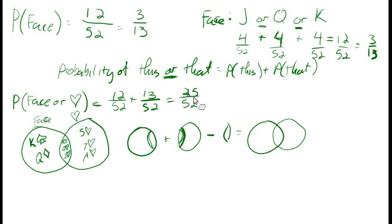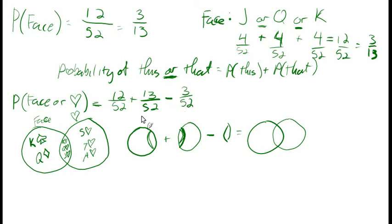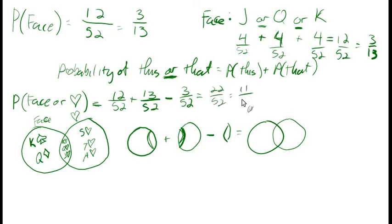So: all the face cards, plus all the heart cards, minus the probability of getting a face card and a heart at the same time. We established that's 3 out of 52 — three cards are both hearts and face cards. We counted those three in the 12 face cards, and again in the 13 heart cards. So we take away one of those sets of three: 12 plus 13 minus 3 is 22 out of 52, which simplifies to 11 out of 26.